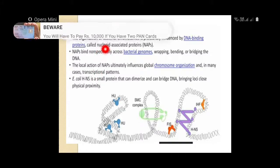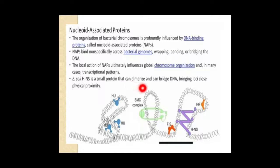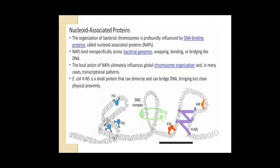The organization of the bacterial chromosome is profoundly influenced by DNA-binding proteins called nucleoid-associated proteins (NAPs). NAPs bind non-specifically across bacterial genomes, wrapping, bending, or bridging the DNA. The local action of NAPs ultimately influences global chromosome organization and in many cases transcriptional patterns. In E. coli, HNS is a small protein that can dimerize and can bridge DNA, bringing loci into close physical proximity. The proteins include HU, SMC, FIS, IHF, and HNS.